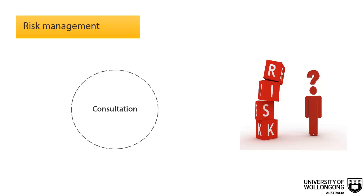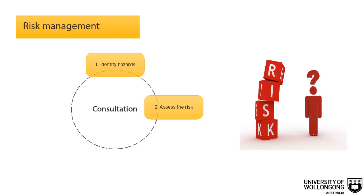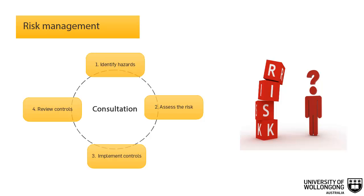Risk Management involves having a systematic process for addressing hazards in the workplace. It is the process of identifying hazards, assessing the risk from the hazard, implementing strategies to eliminate or control the hazard, and reviewing controls to monitor and improve them. The following slides will take you through the risk management process.